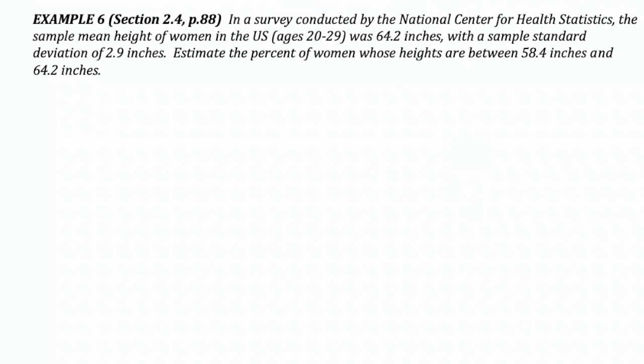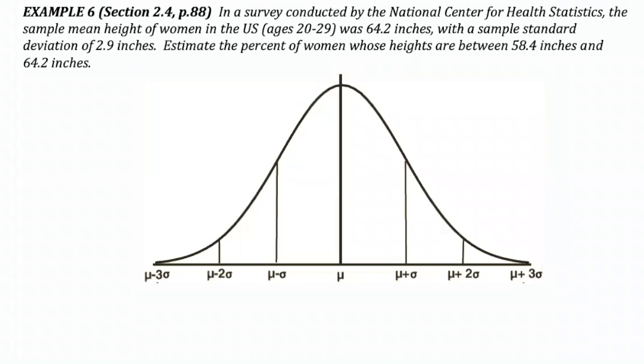So here's a sample question. I pulled this from back in section 2.4. In a survey conducted by the National Center for Health Statistics, the sample mean height of women in the U.S. ages 20 to 29 was 64.2 inches with a sample standard deviation of 2.9 inches. Estimate the percent of women whose heights are between 58.4 inches and 64.2 inches. We can do this using the normal curve. To begin this sort of problem, we usually begin by sketching by hand a normal curve and then putting a line of symmetry in the middle to represent the mean.